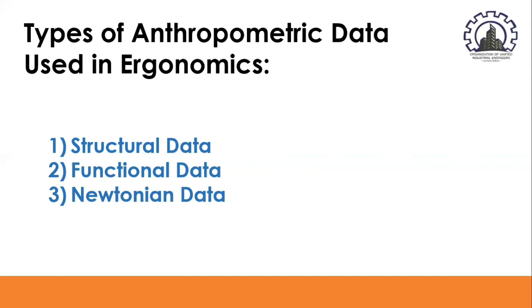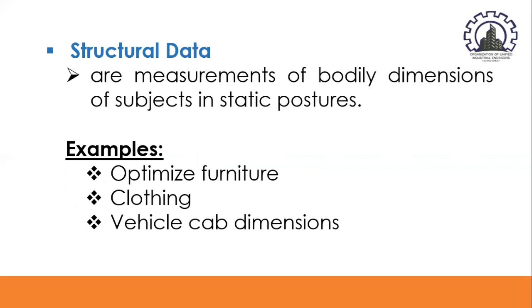Structural data are measurements of bodily dimensions of subjects in static postures. These bodily measurements are made from clearly identifiable anatomical sites, usually bony landmarks under the skin. Examples of the use of structural anthropometric data include: first, to optimize furniture — specifying furniture dimensions and ranges of adjustment; second, clothing — determining ranges of clothing sizes; and third, vehicle cab dimensions.